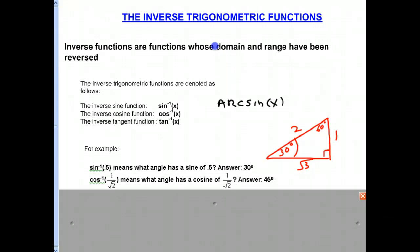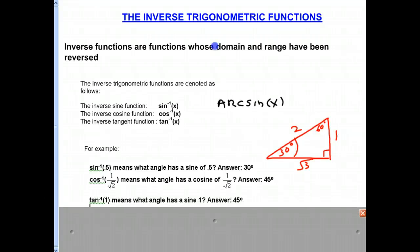Next one might be, what angle has a cosine of 1 over the square root of 2? And when you're asking for the inverse cosine of 1 over the square root of 2, most of you will remember that's 45 degrees.